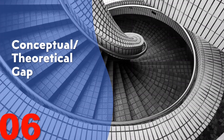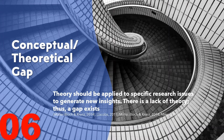The sixth research gap is the conceptual or theoretical gap, dealing with gaps in theory within prior research. If one phenomenon is being explained through various theoretical models, there might be a theoretical conflict, and researchers could examine whether one theory is superior. For example, there might be a general theory about motivation, but it hasn't been specifically applied to understand what motivates volunteers at a charity. In short, theory should be applied to specific research issues to generate new insights — a lack of such application means a gap exists.